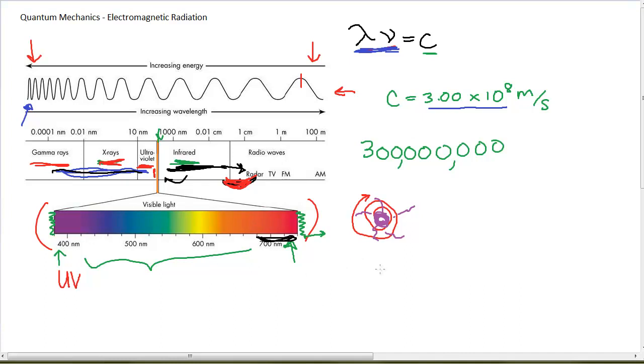So anyway, this is a brief overview of electromagnetic radiation. This is a key formula. The wavelength times the frequency equals the speed of light. And so we can calculate one given the other.